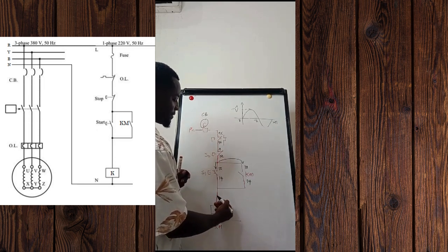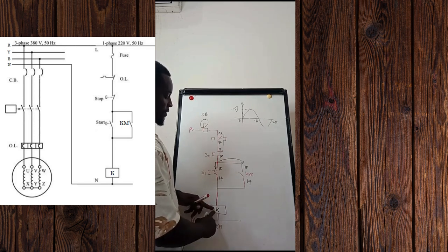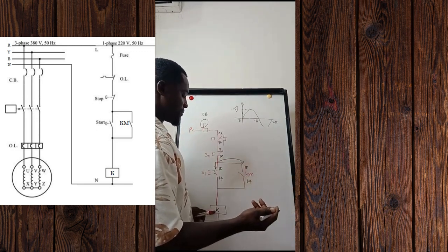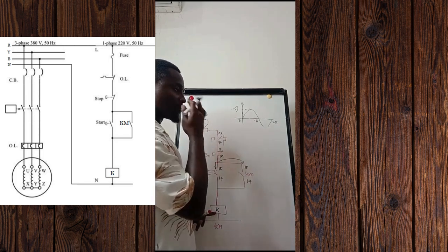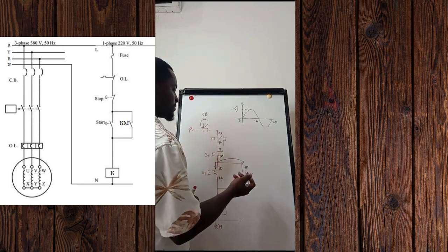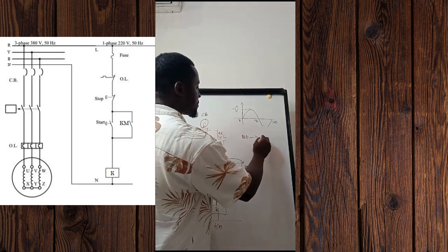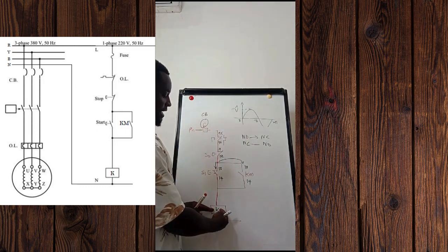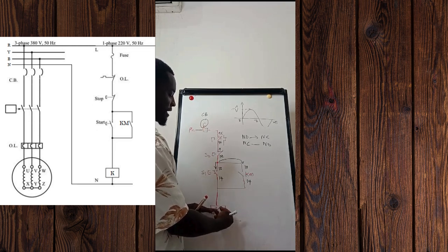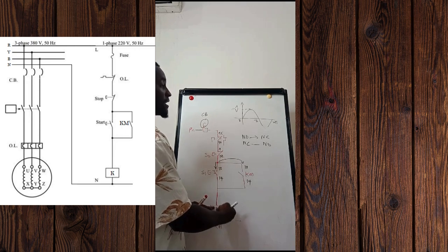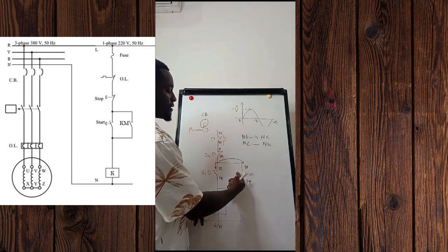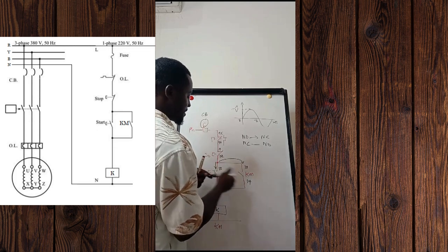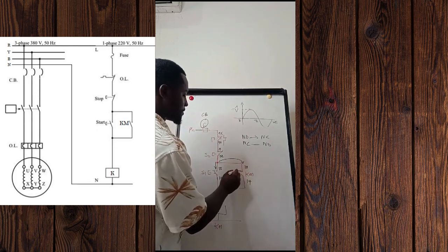Once the coil energizes, we go back to the law of a contactor or relay. What happens is when the coil energizes, its contacts will change state — normally open will change to normally closed, and normally closed will change to normally open. This is the law. So once the coil energizes, all the respective contacts attached to that contactor change their states. The normally open contact associated with this coil will now close.